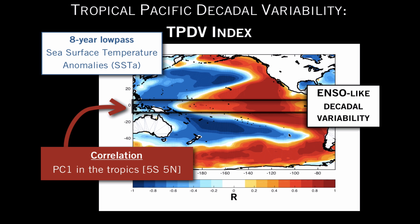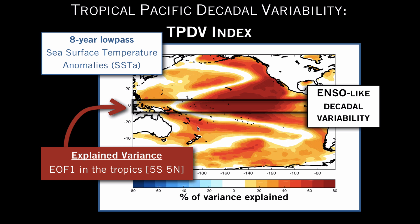If we take this first principal component and do a correlation map with the low-frequency SST, we recover a correlation shape pattern that looks a lot like ENSO-like decadal variability. This type of ENSO-like pattern is recovered if we look at the low-frequency spatial structures of climate modes such as the inter-decadal Pacific oscillation (IPO) or the Pacific decadal oscillation. So this is a recurrent pattern of decadal variability in the Pacific. If we square the correlation to find how much variance is explained, we find that at some locations in the tropics it explains upward of 80% of the variance, and on the whole basin it explains a lot of variance.